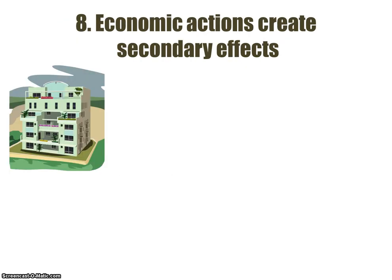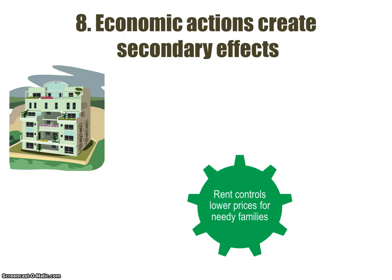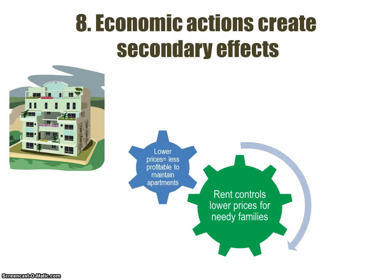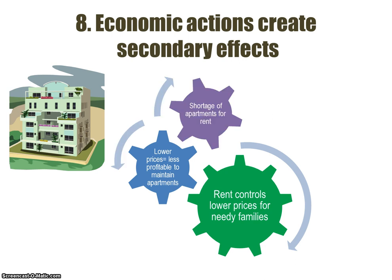Number eight: economic actions create secondary effects. The example the book uses is rent controls. Rent controls lower housing prices for needy families, but as a result, because prices are lower, it's less profitable for landlords to maintain those apartments. Therefore, those rent-controlled apartments are going to go downhill and won't be maintained as effectively or as properly.